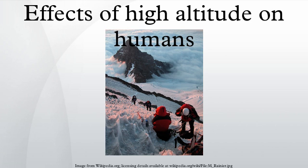For athletes, high altitude produces two contradictory effects on performance. For explosive events, the reduction in atmospheric pressure means there is less resistance from the atmosphere and the athlete's performance will generally be better at high altitude. For endurance events, the predominant effect is the reduction in oxygen, which generally reduces the athlete's performance at high altitude. Sports organizations acknowledge the effects of altitude on performance. The International Association of Athletics Federations, for example, has ruled that performances achieved at an altitude greater than 1,000 meters will be approved for record purposes, but carry a notation that they were set at altitude. The 1968 Summer Olympics were held at altitude in Mexico City, and most short sprint and jump records were set there. Other records were also set at altitude in anticipation of those Olympics.